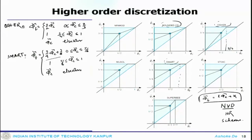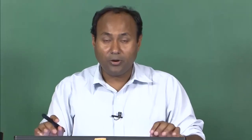The point is that all these higher order schemes belong to this kind of profile definition — the normalized flux definition with some constant factor times phi_c plus a constant. That is how we are building all of these. There are other schemes like MUSCL, H2OIC and others which we will see. We will stop here today and see the other schemes in the next lecture. Thank you.